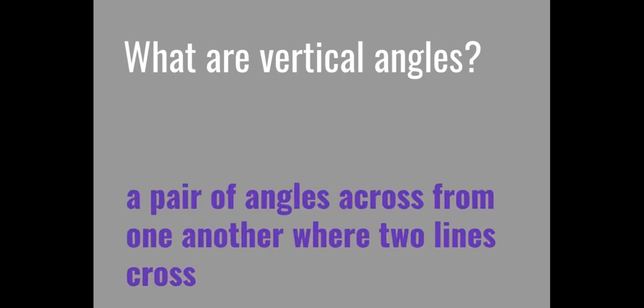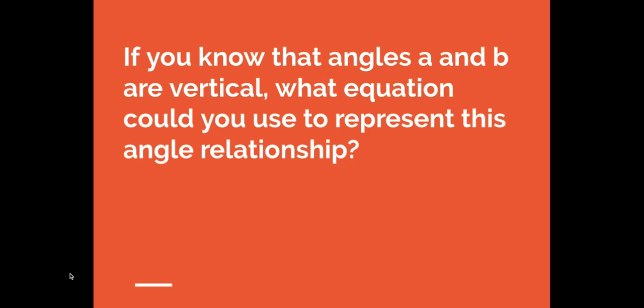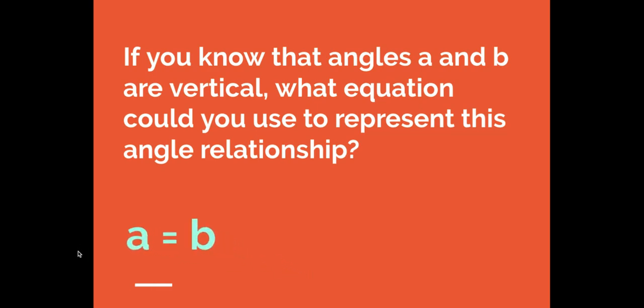What are vertical angles? Vertical angles are a pair of angles across from one another where two lines cross. If angles A and B are vertical, you can write A equals B. Knowing two angles are vertical means they are equivalent, so we set them equal to each other.